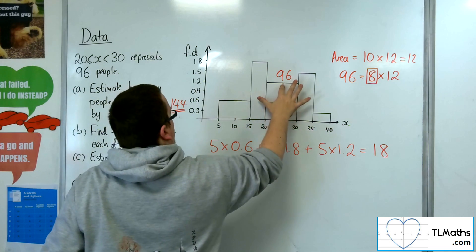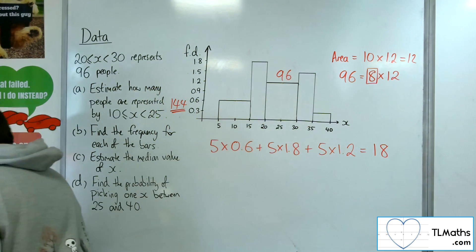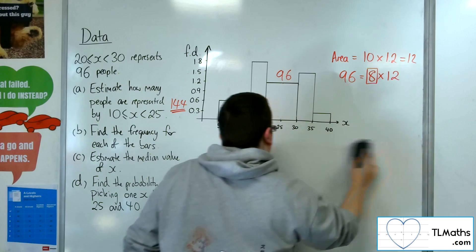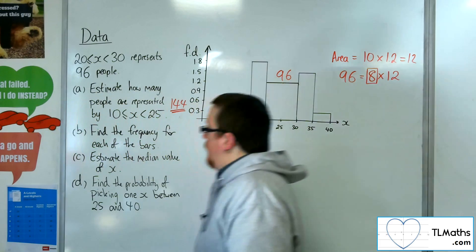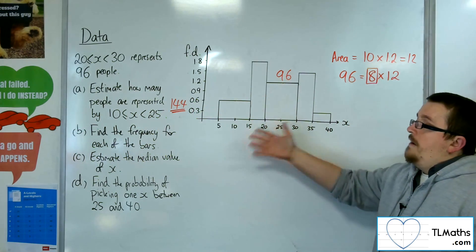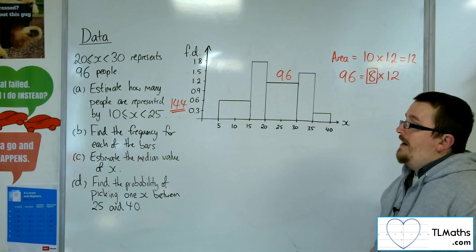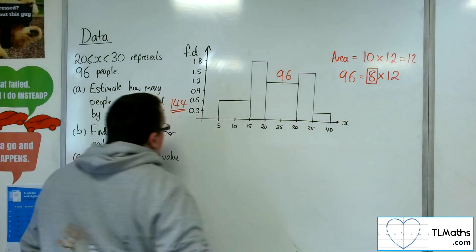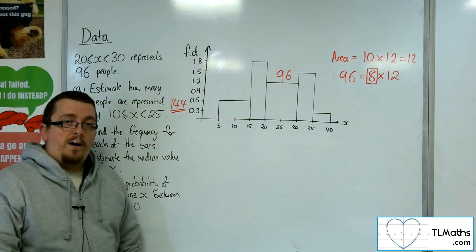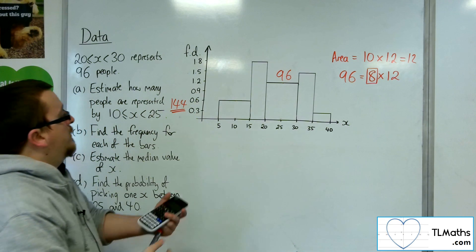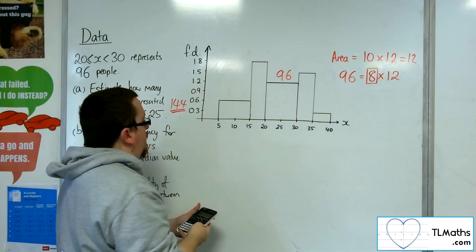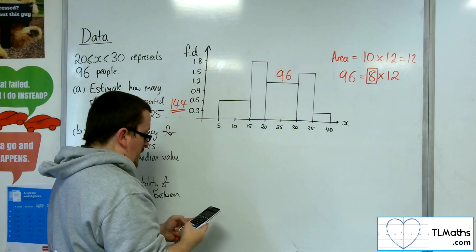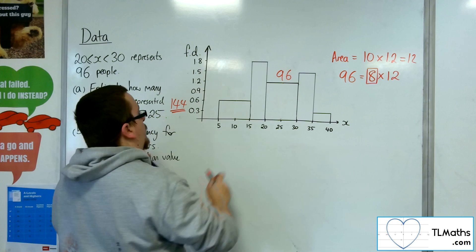Let's give myself a little bit of space. For B, find the frequency for each of the bars. Well, I've got the 96 already, so all I need to do here is find the area of each bar and then multiply it by 8. So this one is 10 times 0.6, and then times that by 8, so 48.